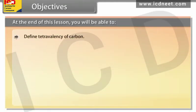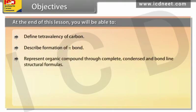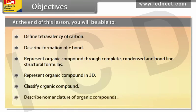At the end of this lesson, you will be able to: define tetravalency of carbon, describe formation of pi bond, represent organic compounds through complete, condensed and bond line structural formulas, represent organic compounds in 3D, classify organic compounds, and describe nomenclature of organic compounds.